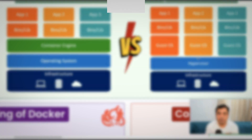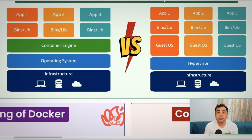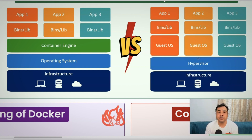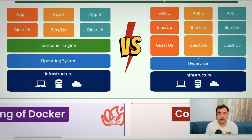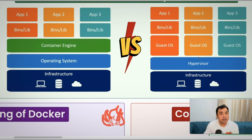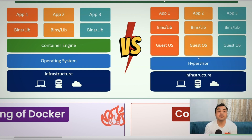Now let us try to understand the difference between containers and virtualization. All cloud computing is based on the virtualization principle, where a single physical hardware is divided into small virtual machines. For example, a physical server with 10,000 cores and 5,000 GB RAM can be divided into multiple virtual machines so that different users could use it. This is, at a high level, what virtualization is.